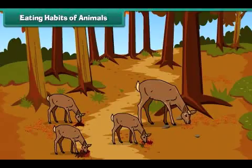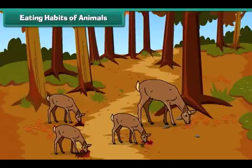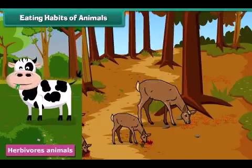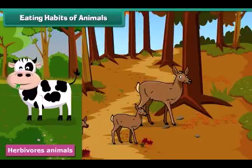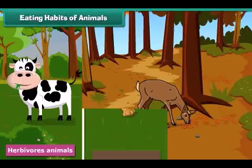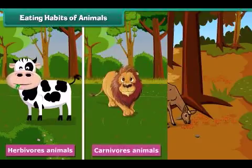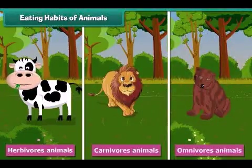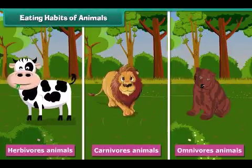All animals need food to get energy and perform various functions. They eat different types of foods with the help of different types of teeth. Herbivores eat plants. They have sharp and flat teeth for grinding grasses and leaves. Cow, goat and buffalo are examples of herbivores. Carnivores eat flesh with their sharp, pointed and strong teeth. Lion and tiger are examples of carnivores. Omnivores eat both plants and flesh. Bear and crow are examples of omnivores.